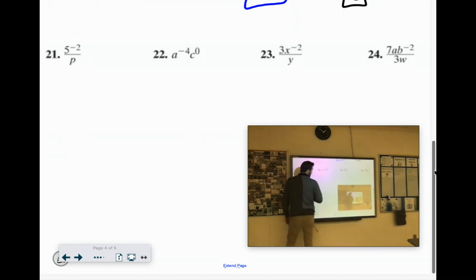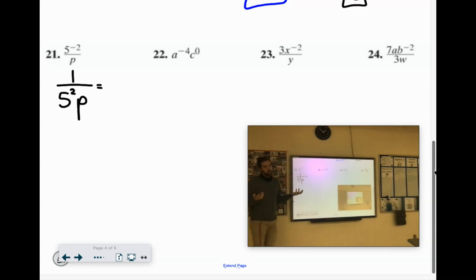5 to the negative 2nd over P. Move the negative exponents. The 5 needs to come down here. The P doesn't need to move at all, it stays there. So it would be 1 over 5 squared P. Now what is 5 squared? 5 times 5, 25. 1 over 25P.